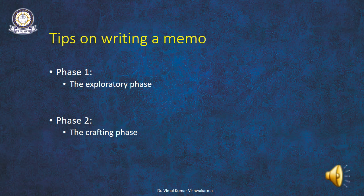Moving on to phase two, the crafting phase: underline every item that is vital to your reader and omit those that aren't. Jot down the purpose of the memo at the top of the page. Divide your underlined items into separate categories, and write a heading for each category — for example, 'when to deliver parts' instead of 'timetable.' Then determine the order of importance of each category to the reader and number them.